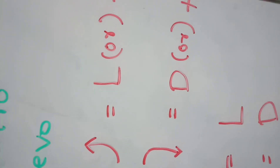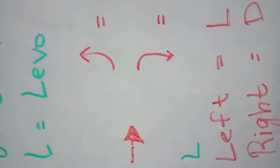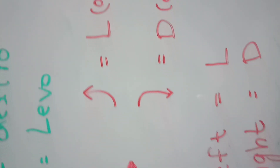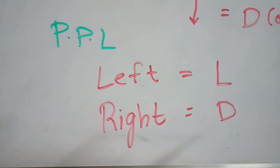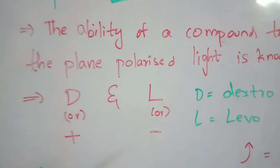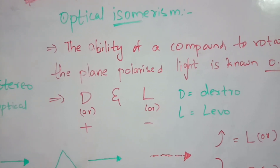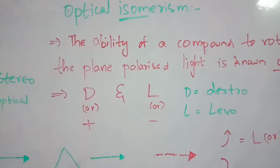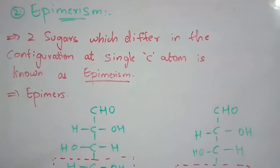When plane polarized light turns towards the right side, it is denoted as D or plus, which stands for dextro. So optical isomerism is denoted by D and L: D (dextro) is represented by a plus sign and L (levo) is represented by a minus sign. Up to now we have discussed isomerism; now let us discuss epimerism.